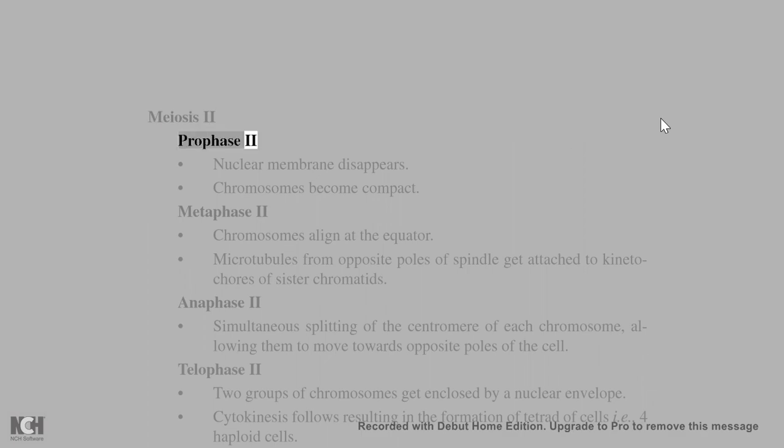Meiosis II. Prophase II: Nuclear membrane disappears, chromosomes become compact. Metaphase II: Chromosomes align at the equator. Microtubules from opposite poles of spindle get attached to kinetochores of sister chromatids.